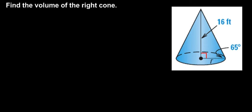To find the volume of this right cone, I'm going to have to take one-third of the area of the base and multiply it times the height. My base is a circle, so the area is going to be π r squared.